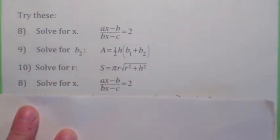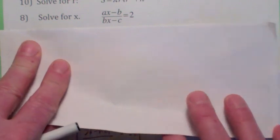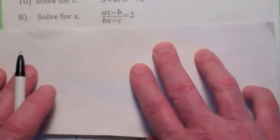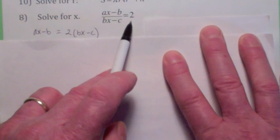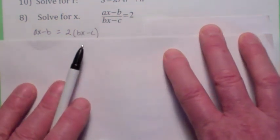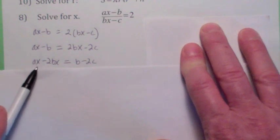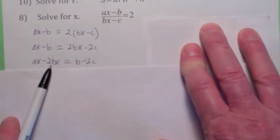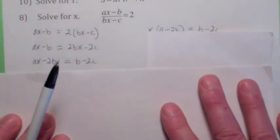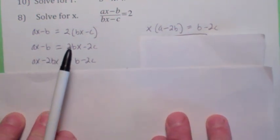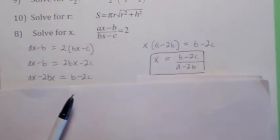So let's do number eight first. This is an equation that has fractions in it, right? So let's cross multiply. Remember, this is 2 over 1. So you'd get ax minus b times 1 equals 2 times the quantity bx minus c. Multiply out the right side. We're trying to solve for x, right? So we're going to want to get the terms that have x on one side. Let's subtract 2bx from both sides. Let's also add b to both sides. Now we're trying to solve for x, right? So let's factor the x out of the left side. And the last step would be to divide both sides by a minus 2b. So there's your answer. x equals b minus 2c over a minus 2b.